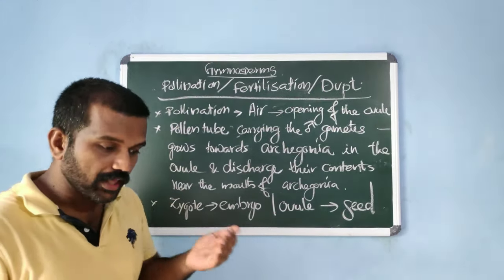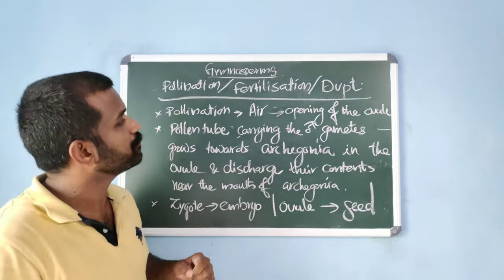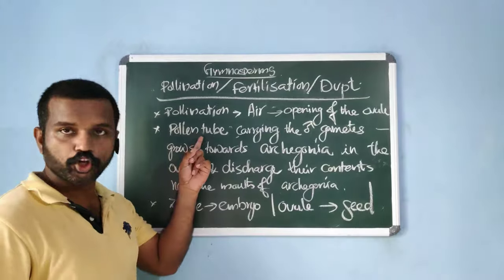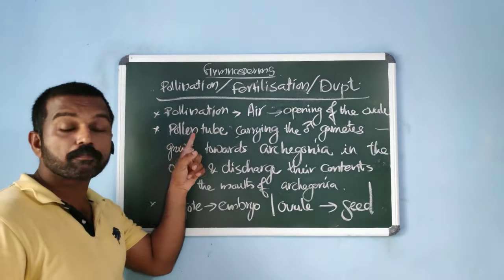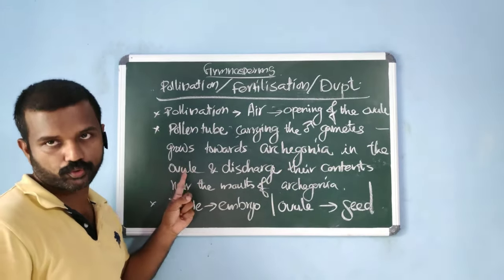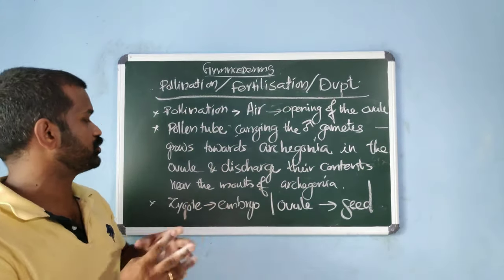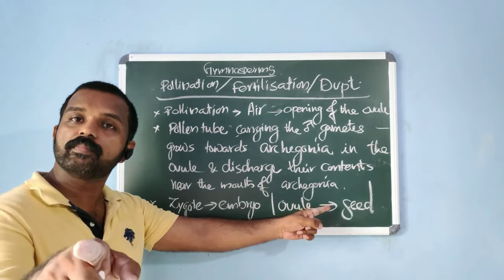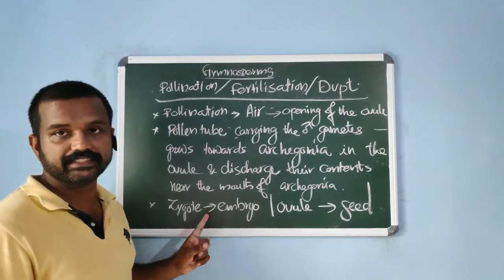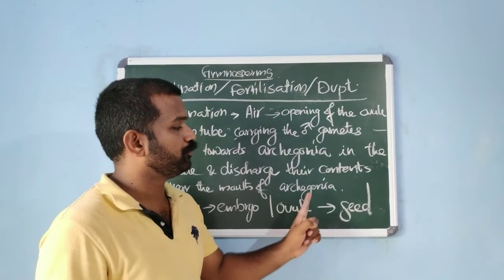Regarding pollination in gymnosperms, pollen grains are carried by air — wind is the only pollinating agent. The pollen grains are deposited on the opening of the ovule. After pollination, the pollen tube carries the male gametes towards the archegonia in the ovule, discharging the male gametes near the mouth of the archegonia. Inside the archegonia, internal fertilization takes place. After fertilization, the zygote develops to form the embryo, and the ovule forms a seed. There is no ovary, so no fruit is formed.